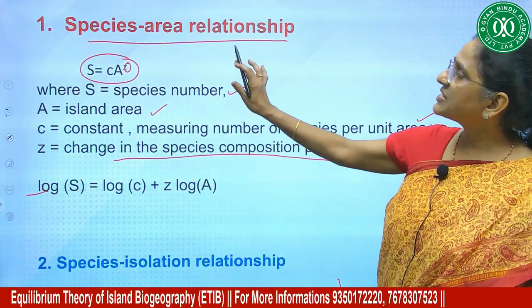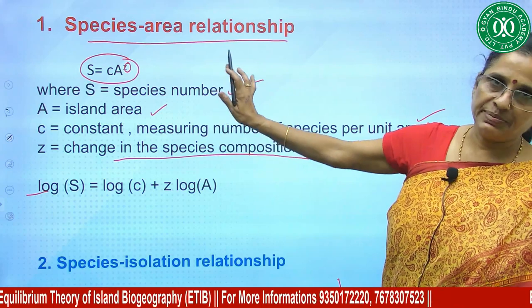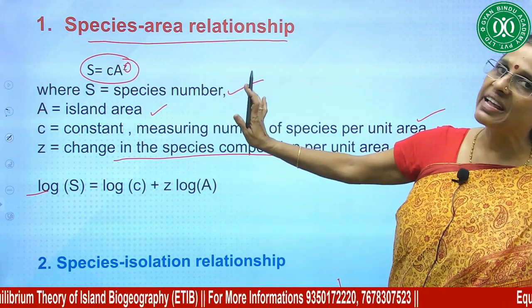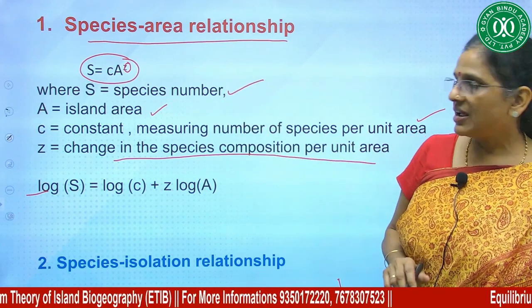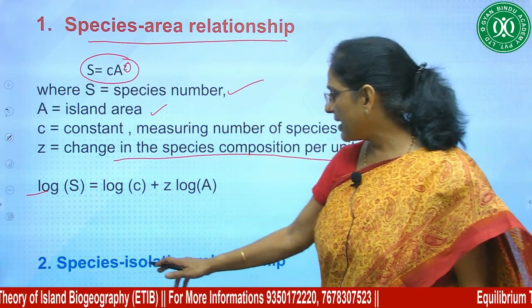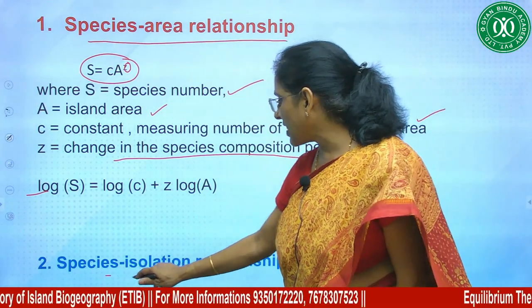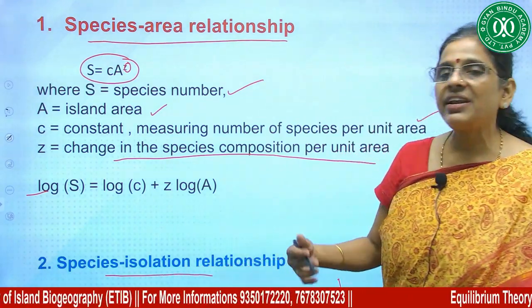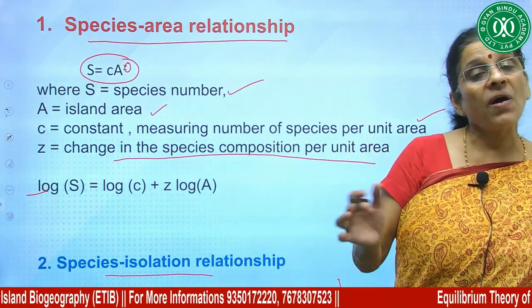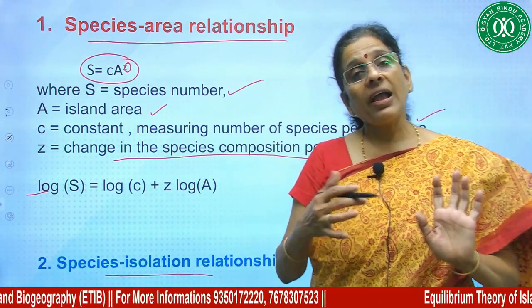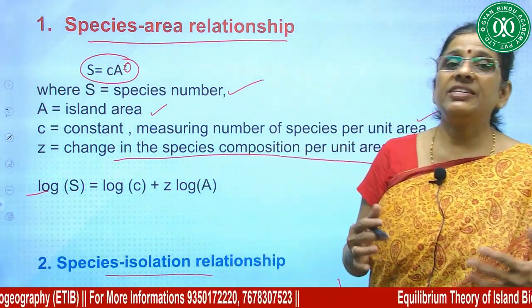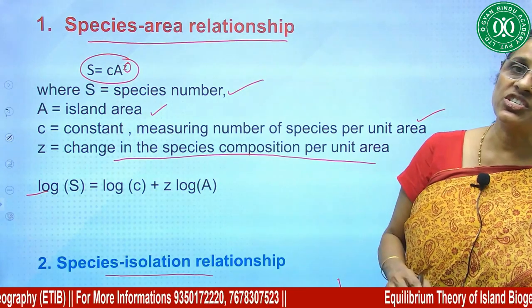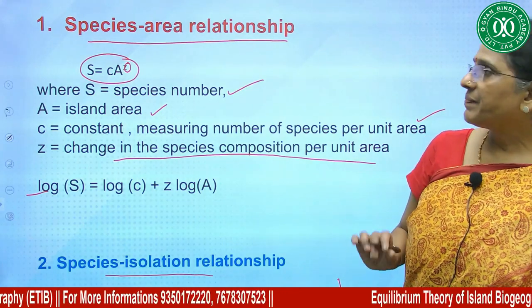The log form becomes: log S = log C + Z × log A. This is the species-area relationship. Then there is the species-isolation relationship, or island-mainland distance relationship.